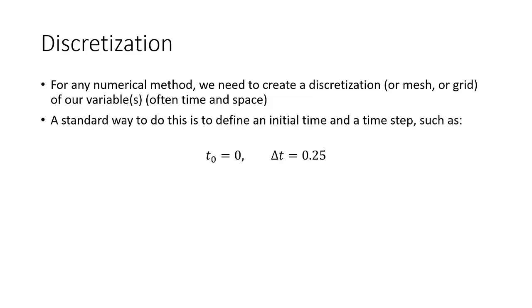So one of the standard ways to do this is to define an initial time, which we're going to call t₀, and a time step. So for example, we could have t₀ equals zero and Δt of 0.25 seconds. And then each time that we're going to solve for is going to be t_n, where n is every integer value starting at zero. And then you can see that t of any n is just going to be equal to n times Δt.